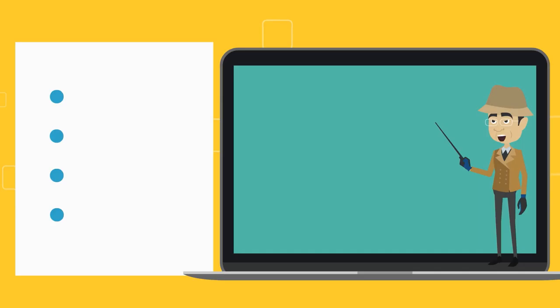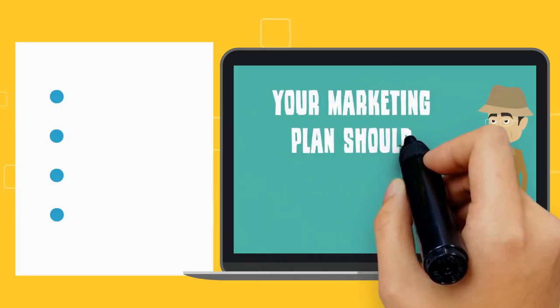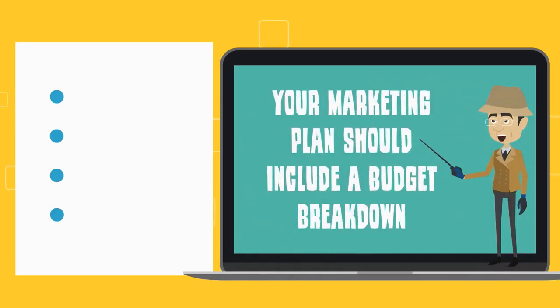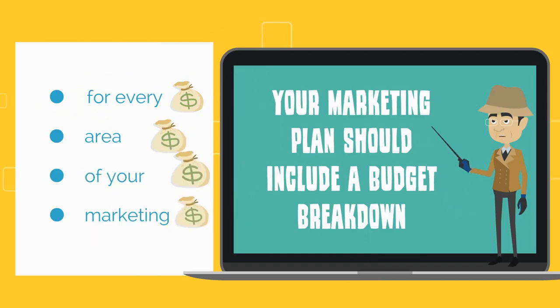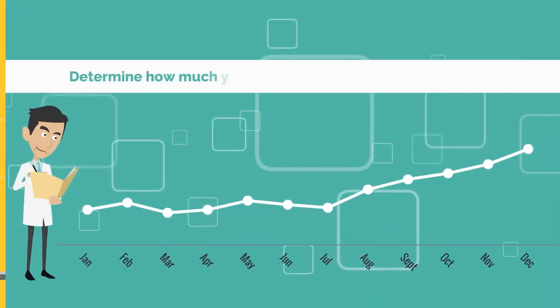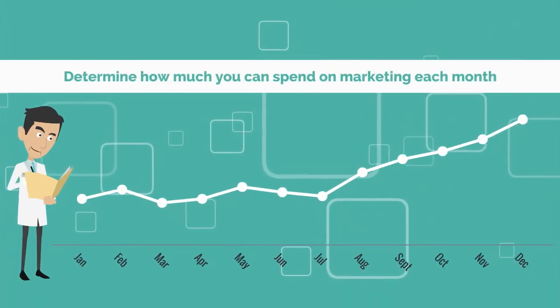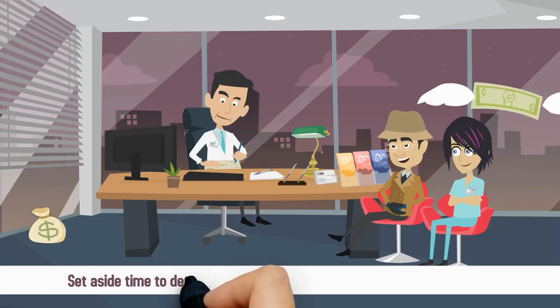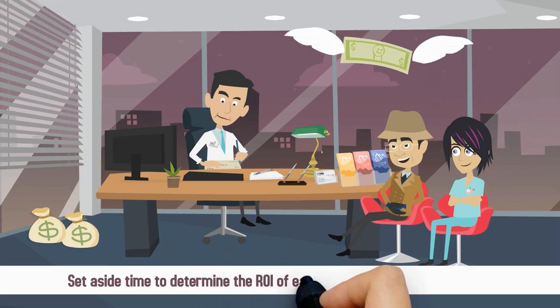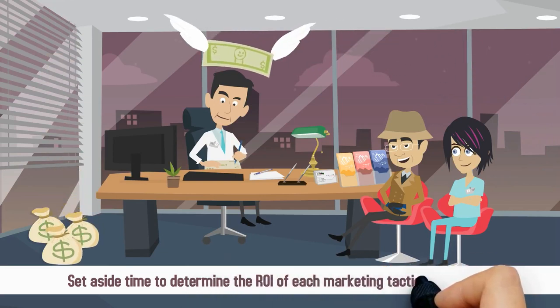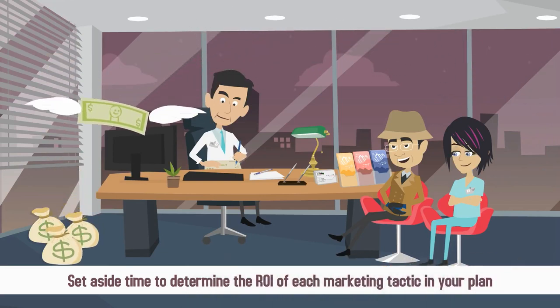Budget. Your marketing plan should include a budget breakdown for every area of your marketing. Determine how much you can spend on marketing each month and set aside time to determine the ROI of each marketing tactic in your plan.